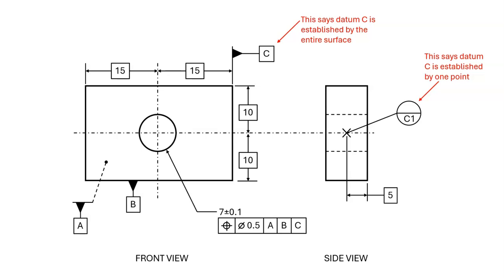The datum feature C symbol in the front view explicitly says that datum C is established by the entire surface. This is a conflict with the side view that tells us that datum C is established by just one point, not by the entire surface. We must not put conflicting information on the drawing.